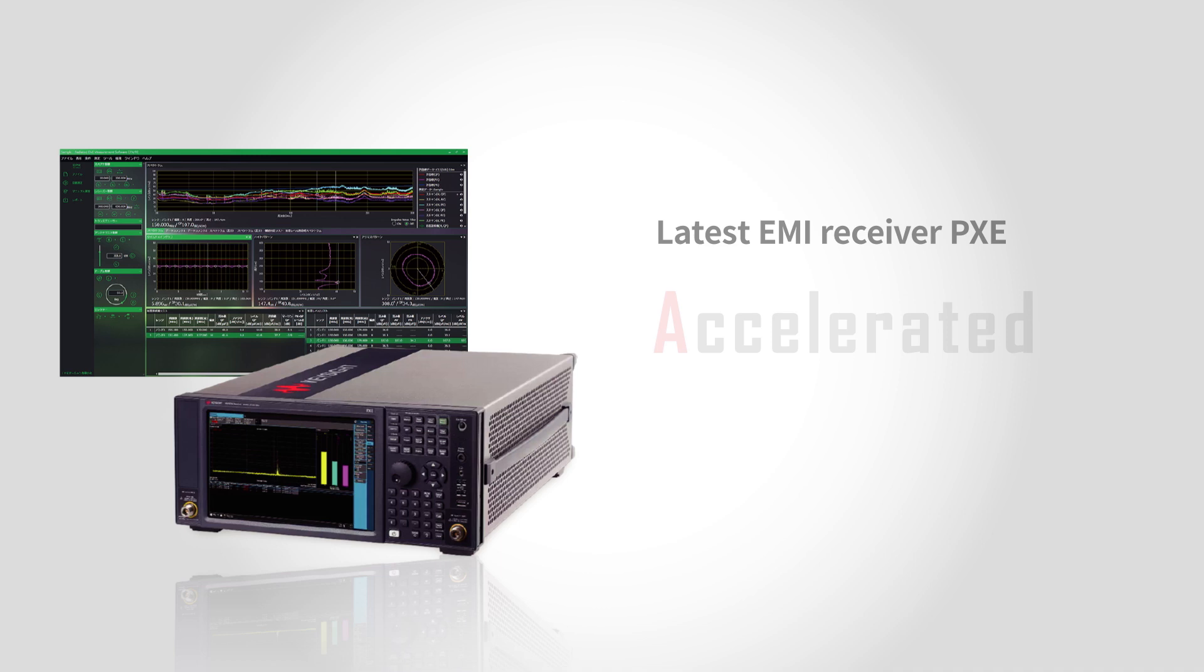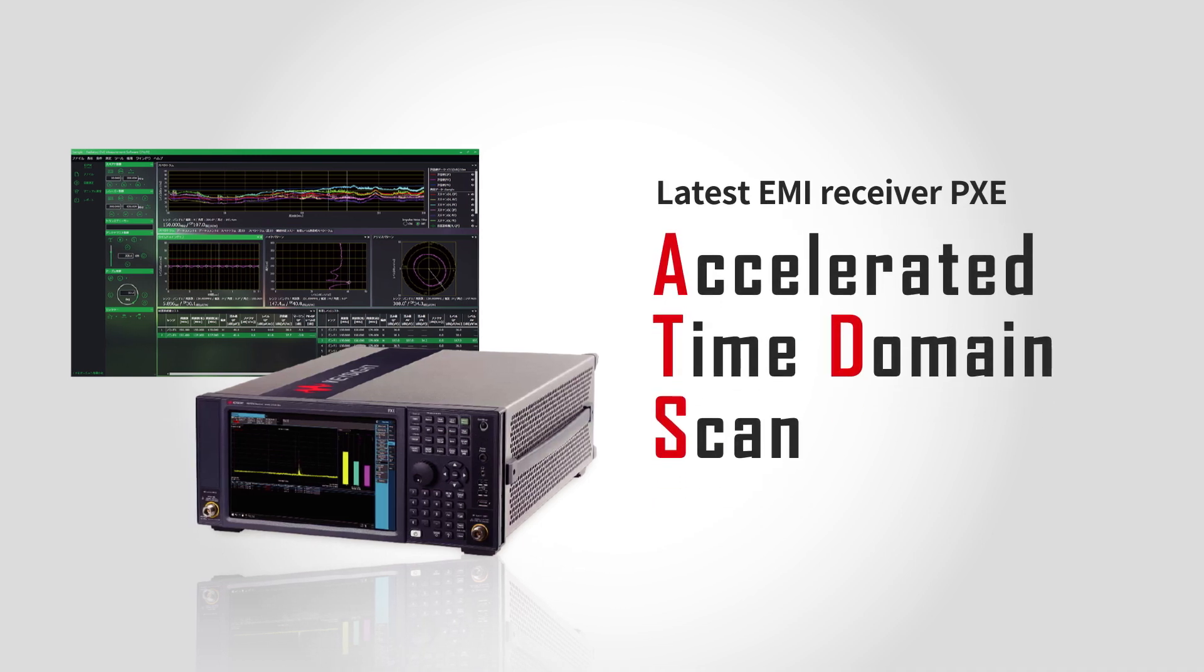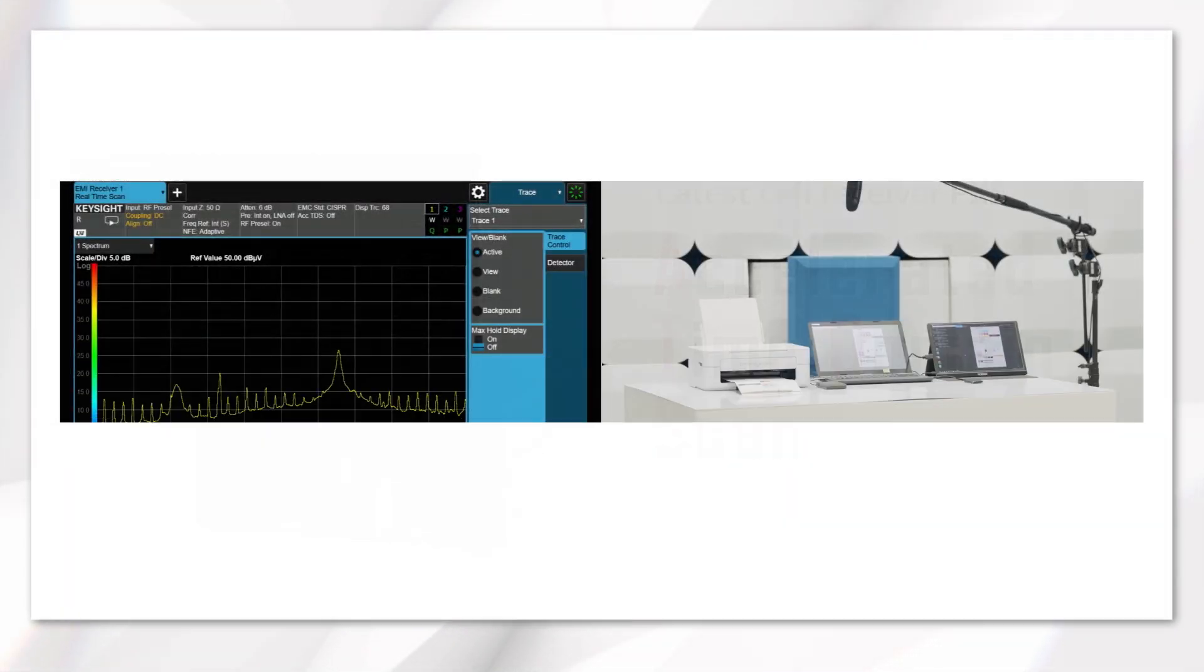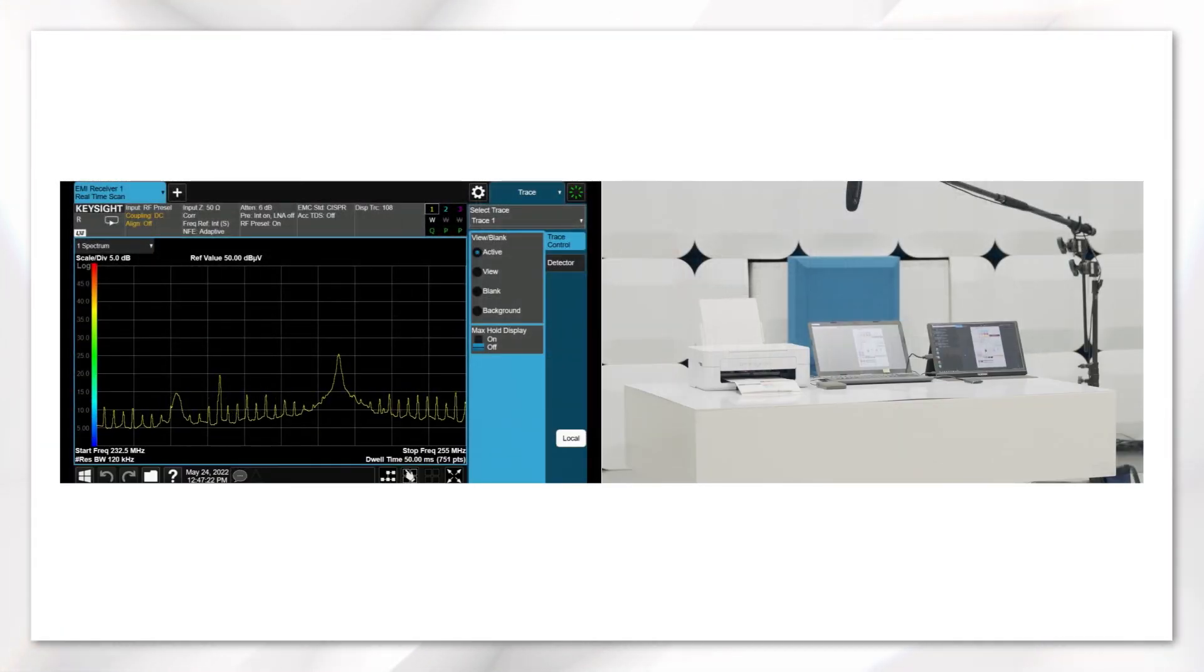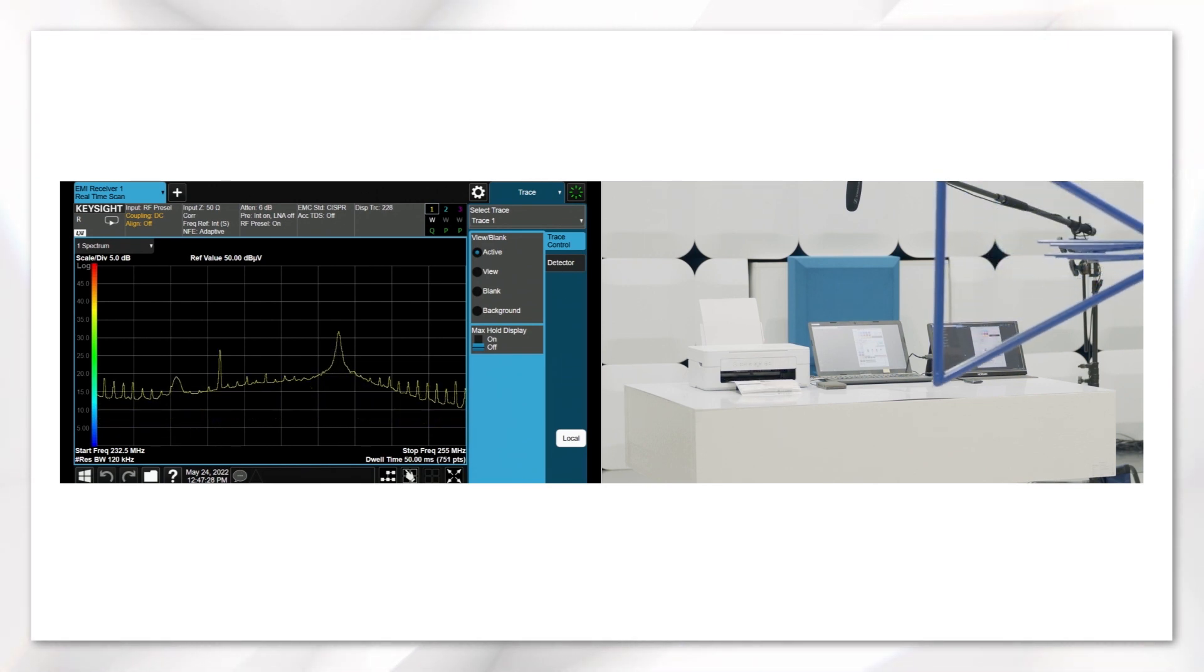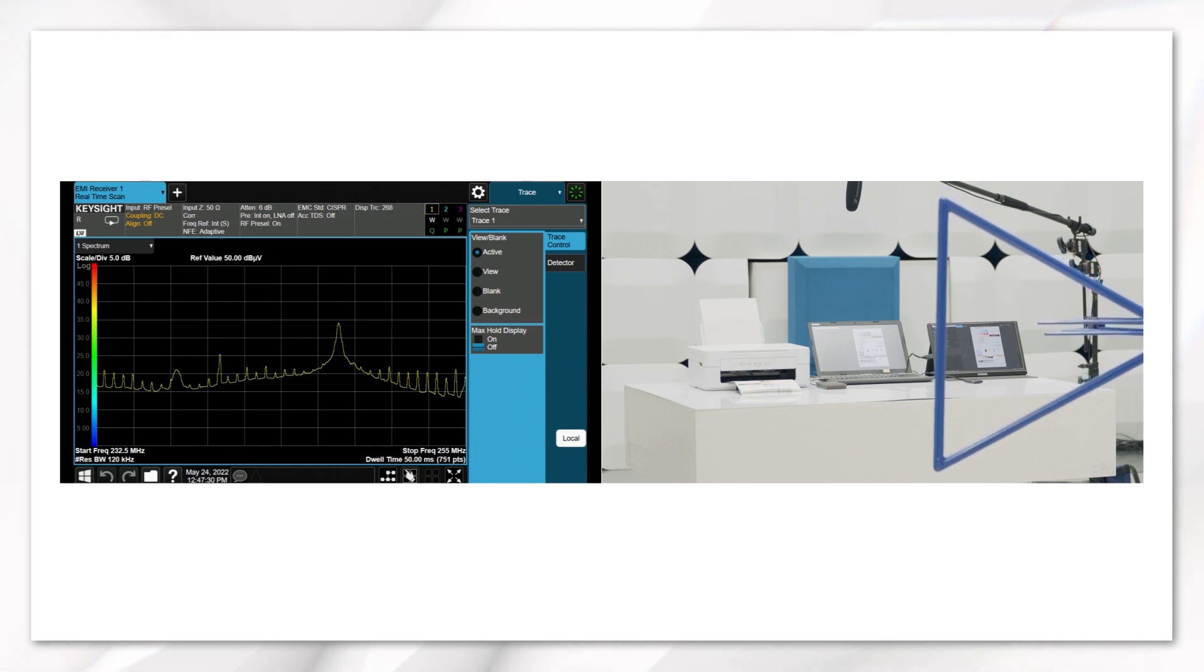The Accelerated Time Domain Scan on the PXE can address these challenges at compliance measurement. With the PXE, you can accurately determine the peak noise levels with just one measurement. That is because it gaplessly monitors the noise in the suspect list at all times.